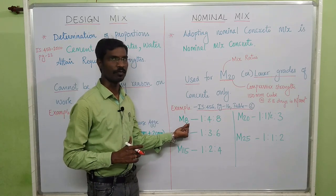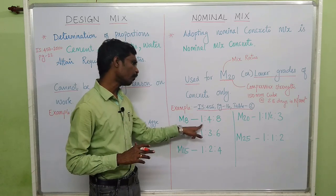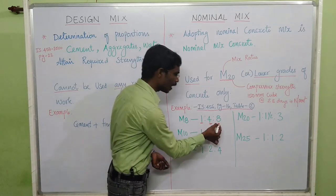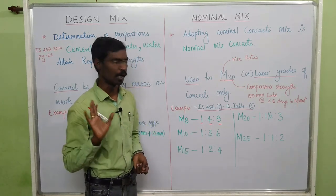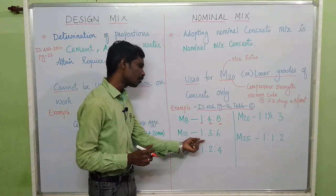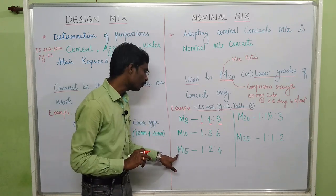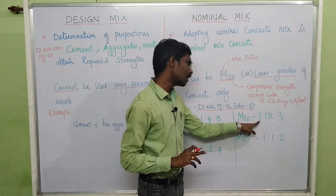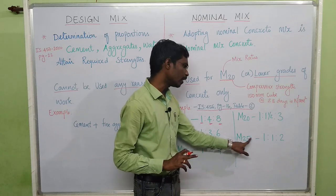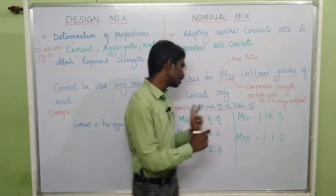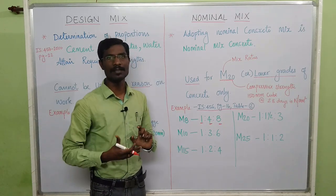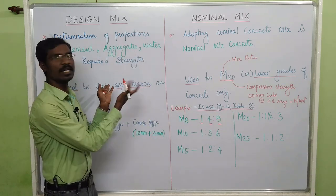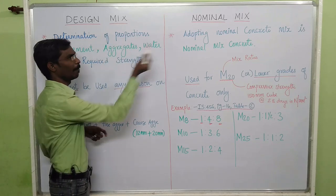The 8 is the compressive strength. M8 means nominal mix 1:4:8 — 1 denotes cement, 4 denotes sand, 8 denotes coarse aggregate (20mm only). Likewise, M10 denotes 1:3:6, M15 denotes 1:2:4, M20 denotes 1:1.5:3, and M25 denotes 1:1:2. These are the nominal mix ratios given in IS 456, page 16, table 2. The basic difference: design mix determines proportions of cement, aggregate, and water, while nominal mix adopts an already-designed concrete mix ratio.